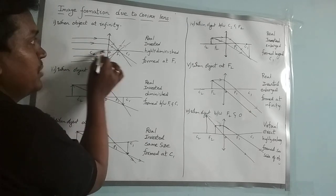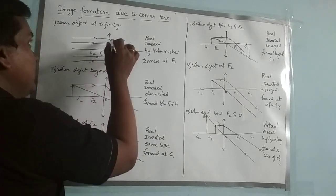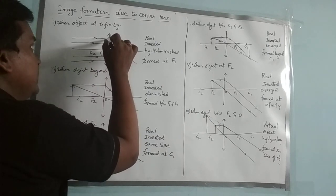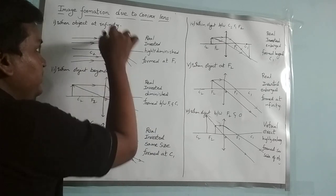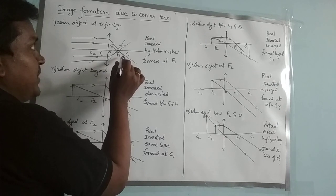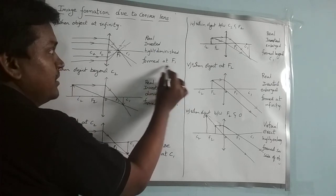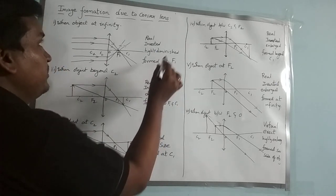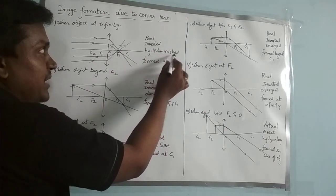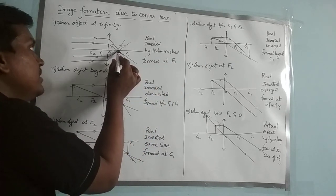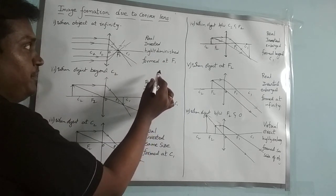These two are parallel rays which are parallel to the principal axis. The rays which are parallel to the principal axis will pass through the focus. So all these rays are passing through this focus, and the image is formed at this focus F1. The characteristics of the image are: it is a real image, inverted image, and highly diminished — because it is a point image.